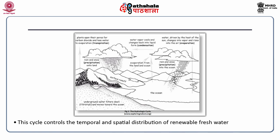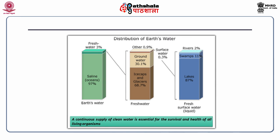Climatic factors and changes in climate further complicate the predictability of this distribution. Thus, the cycle plays a vital role in creating a habitable climate and moderating temperatures. Water covers more than 70% of earth's surface, of which 97% is in the ocean, which is unfit for human consumption because of its high salt content. Of the remaining 3%, 2% is locked in the polar ice caps and glaciers, and only 1% is available as fresh water in rivers, lakes, streams, reservoirs and groundwater.